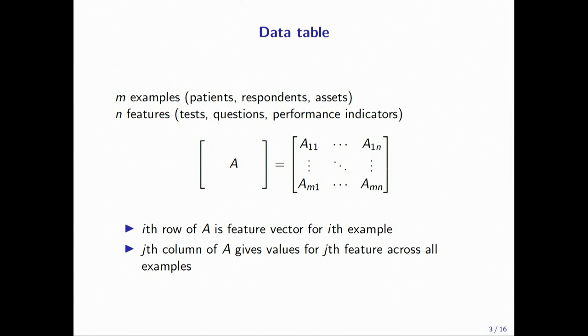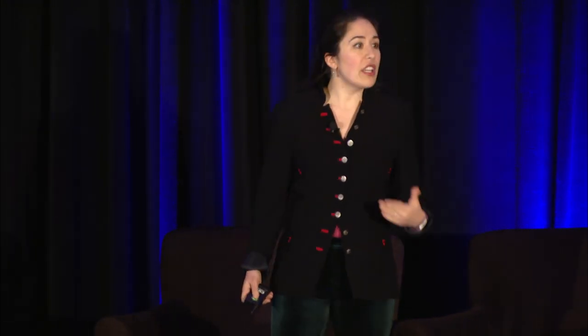More generally, suppose you've got a data table. The data table has M examples, drawn as rows. These might be patients in a hospital, respondents on a survey, or assets in a financial model. We'll see a setting later when they're data sets in machine learning. And we've got N things that we know about these examples — values seen on a test, answers to questions, performance indicators for different assets. The i-th row is the feature vector for the i-th example, and the j-th column is the j-th feature across all examples.